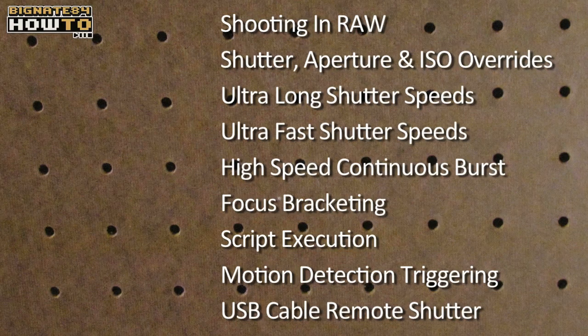Shooting in RAW. Shutter, Aperture, and ISO overrides. Using long shutter speeds up to 64 seconds, and sometimes much longer depending on your camera. Ultra-fast shutter speeds like 1/10,000th of a second, and sometimes much faster. Customizable high-speed continuous burst. Focus bracketing. Script execution including intervalometer time-lapse scripts. Motion detection triggering, fast enough to capture lightning. USB cable remote shutter release. And that's just the beginning — there are many more features.